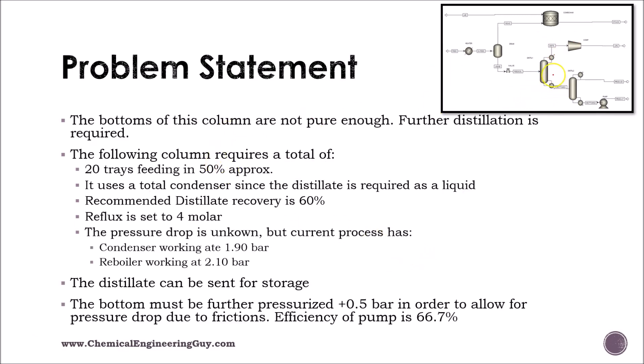Now probably you're wondering what happens with the bottoms. Well this is typically knowledge, but let's say we are actually working in this plant and we know that this is not pure enough for our client. So we must add a further distillation and this is very common. We run several distillation columns in order to separate several processes. The following column requires a total of 20 trays. Typically you will have a low number of trays until eventually increasing the number of trays to increase purity. The feed tray is approximately half of these, so let's assume the feed tray is in the 10th tray.